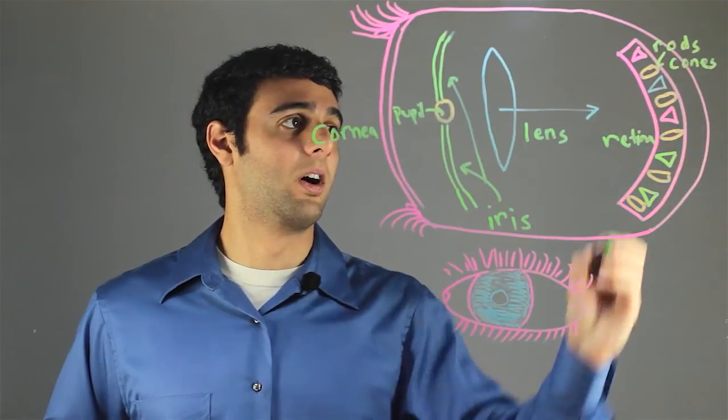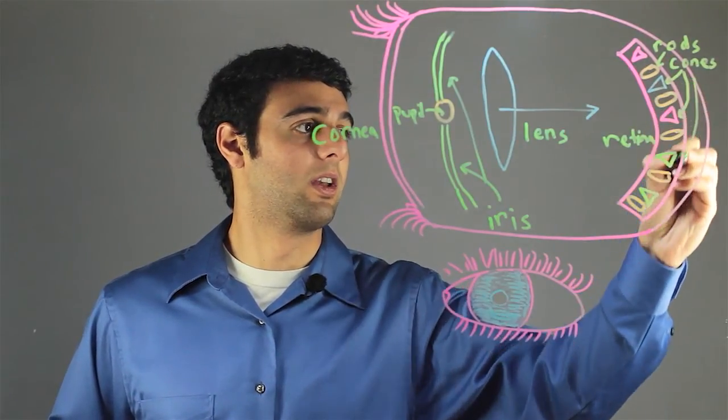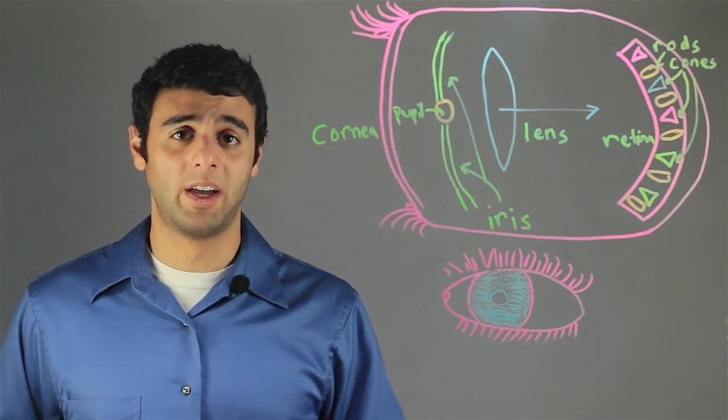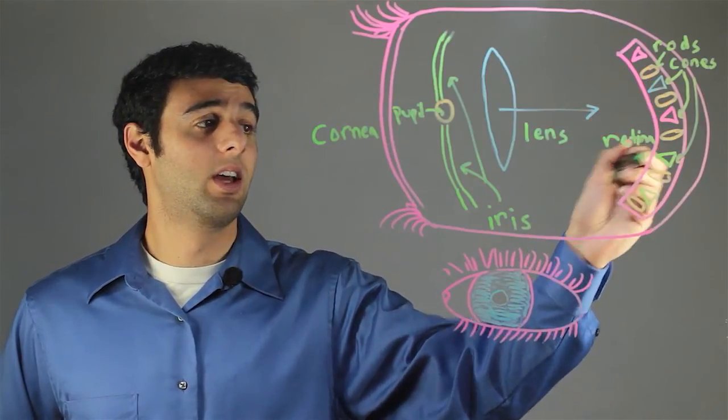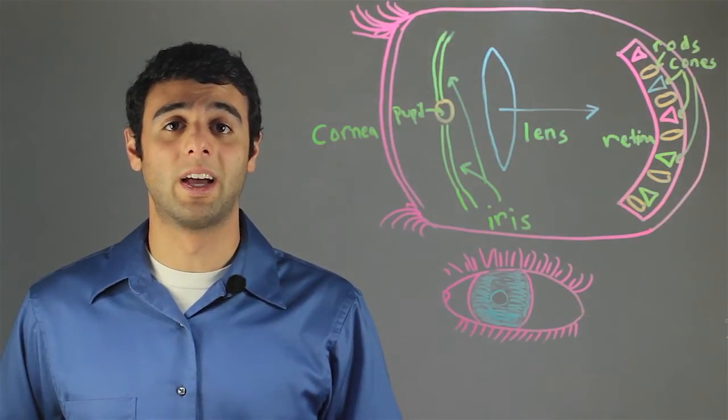So these are the rods, and the cones are the ones that are drawn in different colors. Cones have three different varieties: blue, red, and green. Thus they are responsible for our color vision in bright lighting.